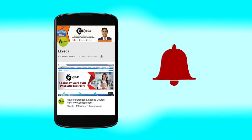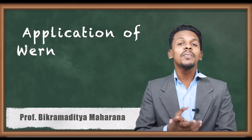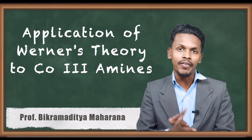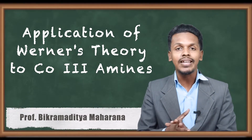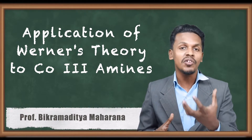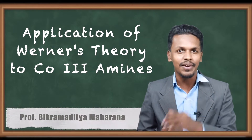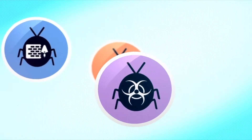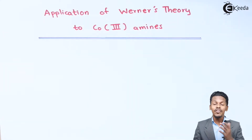In the previous topic we discussed Werner's theory, and now in this topic we are going to talk about the application of Werner's theory on cobalt(III) amines — how we can predict the primary valency and the secondary valency. Let us understand in detail.